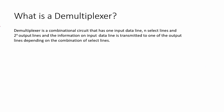As you can see, a demultiplexer is a combinational circuit, which means it doesn't have any memory. It has one input data line, n select lines, and 2^n output lines.